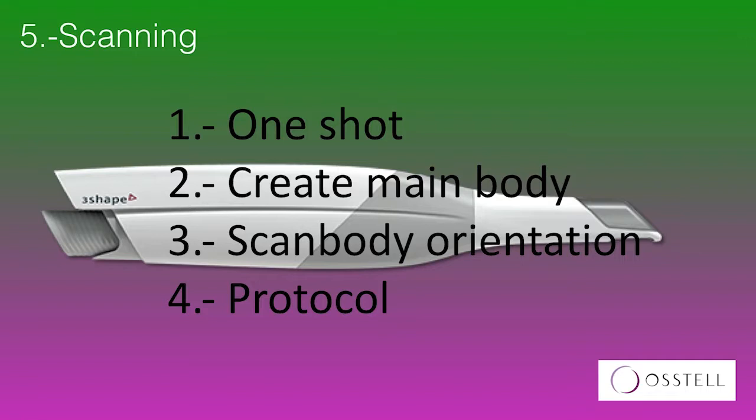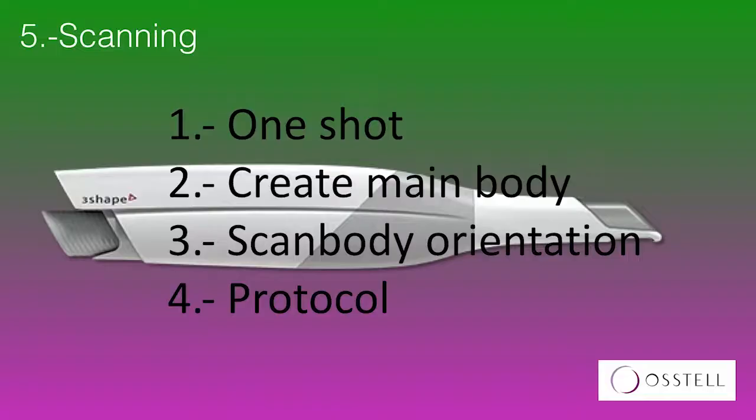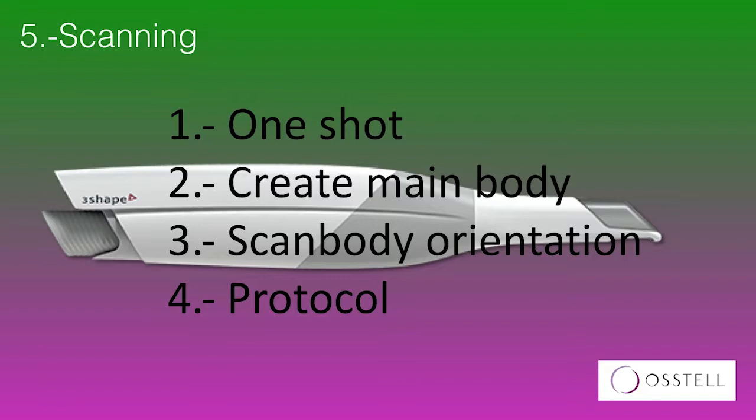Our recommendation with the TRIOS is to make what we call a 'one-shot' scan — scan continuously without stopping to create a full body of the maxilla or mandible with a lot of registrations non-stop. Stopping the scanner causes the software to stitch different streams, which produces worse results. Also, orient the flat part of all scan bodies to the same side — palatal or vestibular — so that with one movement you record all flat parts in one shot. This is very important for lower arch scanning.